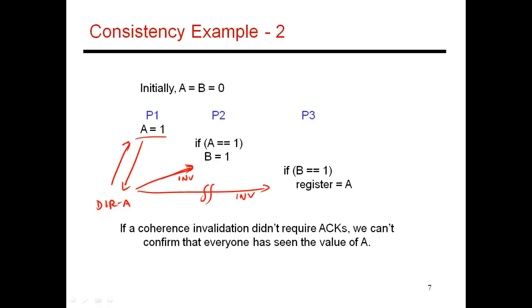So in the meantime, P1 has been given permissions to work with A. It does A equals 1. P2 tries to now read A. It sees that it has an invalid copy, sends a message to the directory. The directory says P1 has the latest copy. P1 now sends it the latest copy. It sees A equals 1.